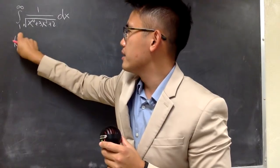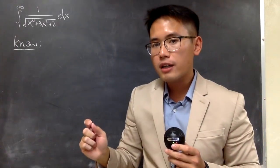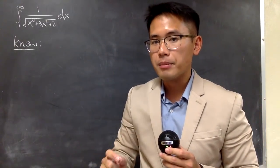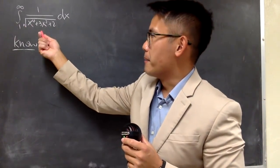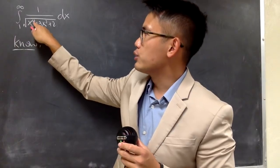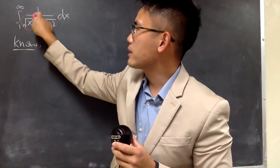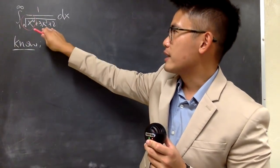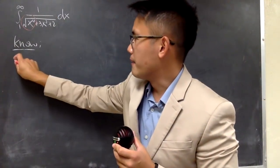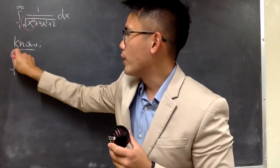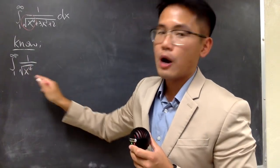Let me write it down. The way to do it is we pick the dominating part in the numerator and also in the denominator. The top is just 1, so it stays as 1. From the denominator, I'll pick x to the fourth power because it has the biggest power — but it's inside a square root, so I'll consider just that. I'll write the integral from 1 to infinity of 1 over the square root of x to the fourth power, dx.